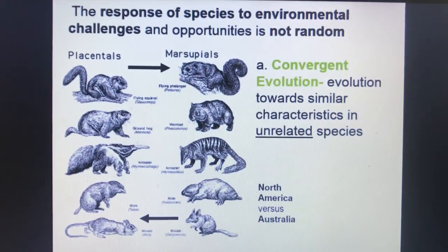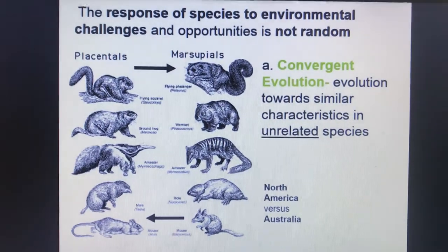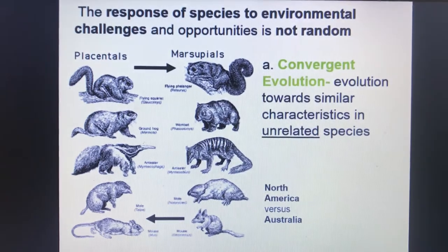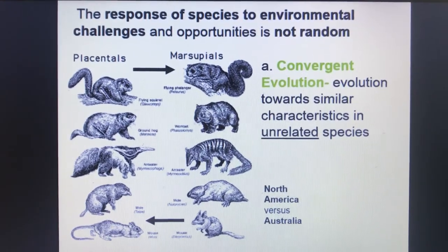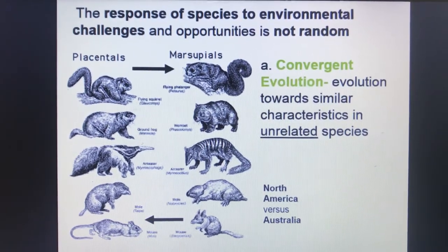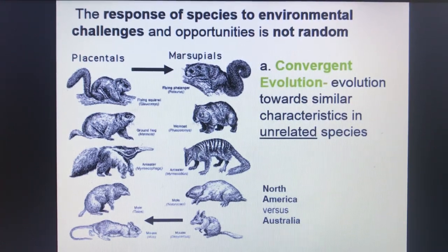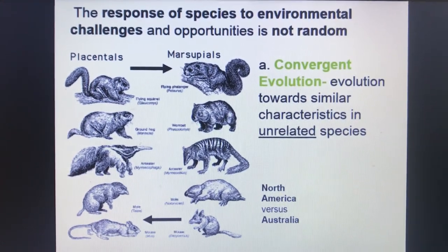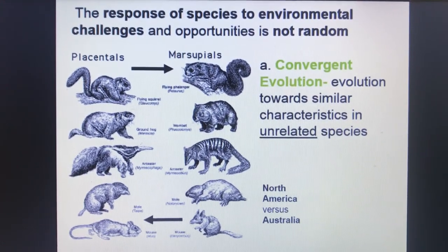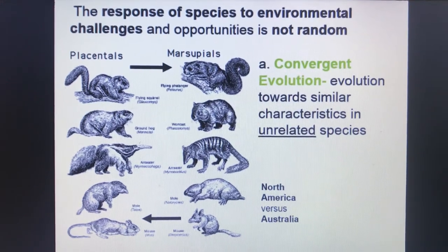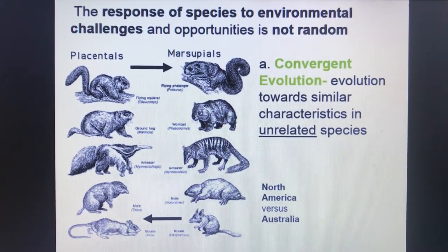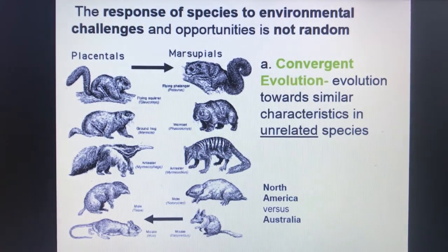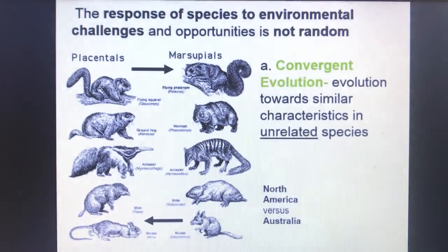A lot of times with isolation we come up with what's known as convergent evolution. Animals such as the marsupials — organisms that carry their young in a pouch — versus placental mammals that give live birth. The marsupials are found in Australia and look very similar to the placentals found in North America; however, they are completely unrelated.